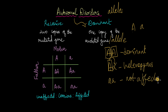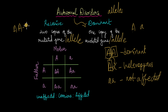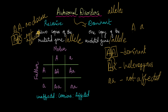For autosomal recessive conditions to be expressed, two copies of the mutated recessive allele must be present. When the genotype is homozygous dominant, there is no recessive allele, so this person will not be affected. In the case of a heterozygous condition, the dominant properly functioning allele suppresses the mutated recessive allele, so this person is not affected — but they are still carriers of this recessive allele. Such heterozygous people in autosomal recessive conditions are known as carriers. In the case of homozygous recessive, you have two copies of the mutated allele, which means this person will have the disease.